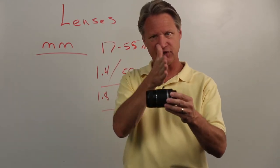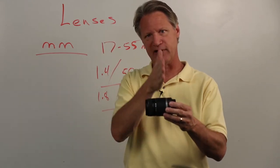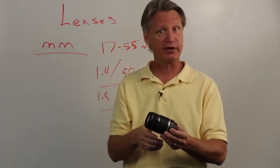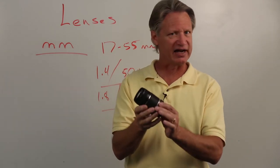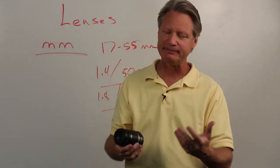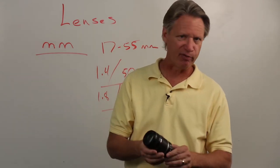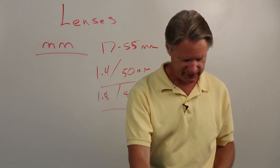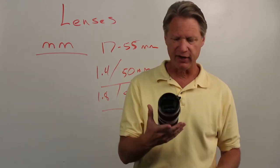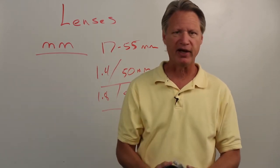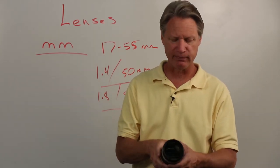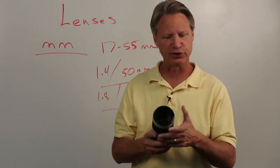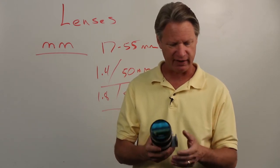The glass elements in these lenses must be parallel to each other. If a lens gets knocked out of alignment, you have problems and your pictures can get fuzzy. The professional lens by contrast is very heavy, robust, and strongly built — meant for a professional to use every day.